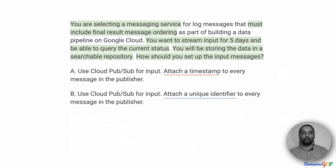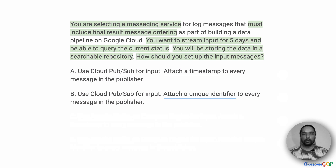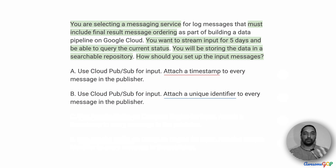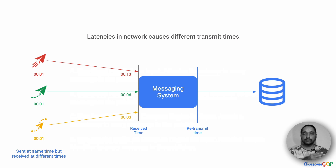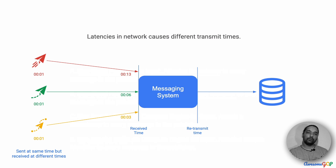Among A and B, we need to choose whether we attach a timestamp to every message or we attach a unique identifier. What will give us the ability to have a final ordering that is the way we want it? There are a few things we need to understand before answering that. Irrespective of when the message is sent, there could be significant differences in the network that cause latencies, and therefore the time of arrival of the message could be very different.